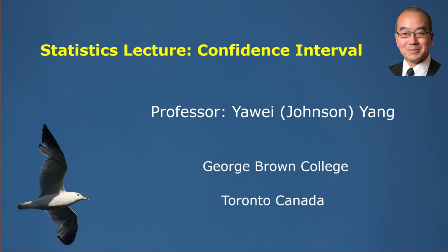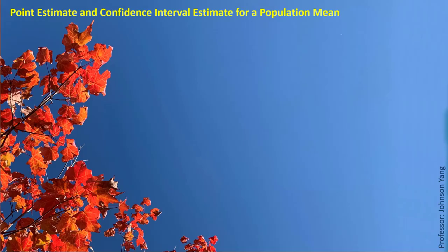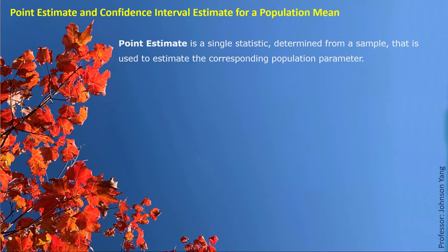Hello everyone. Here we talk about confidence intervals. When we try to use data from a sample to estimate the parameter of the population, we may choose a statistic calculated from sample data to simply represent the corresponding parameter. This kind of estimate is called a point estimate — a single statistic determined from a sample that is used to estimate the corresponding population parameter.